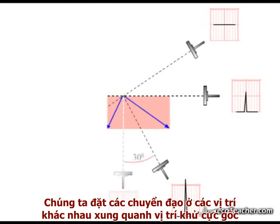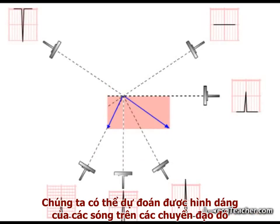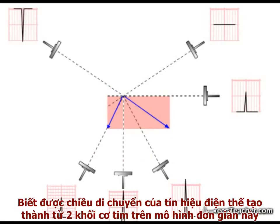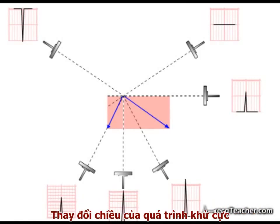We can place leads at various points around the origin of the depolarization signals and, using the same simple maths, we can predict the readout in each of these leads. Note how the pattern of flow in these two pieces of myocardium in this simple model produces a distinctive pattern of deflections in the leads. Change the angles of flow of depolarization and the pattern in the leads will change accordingly.